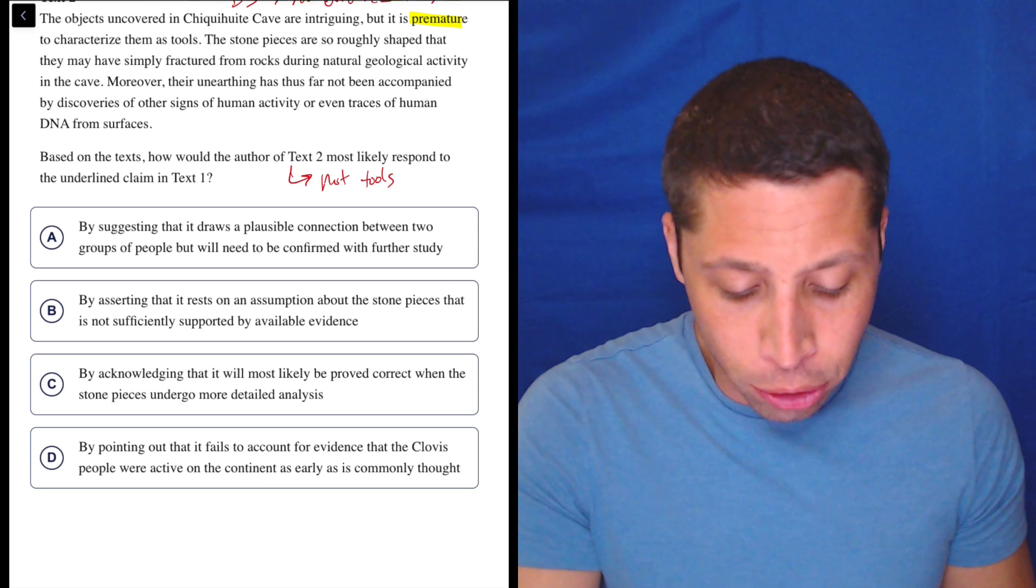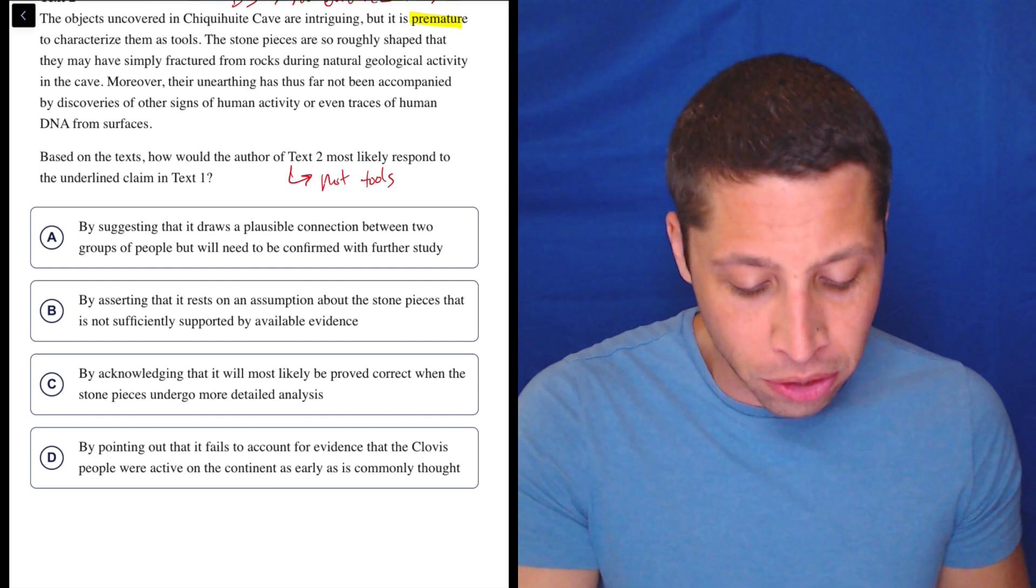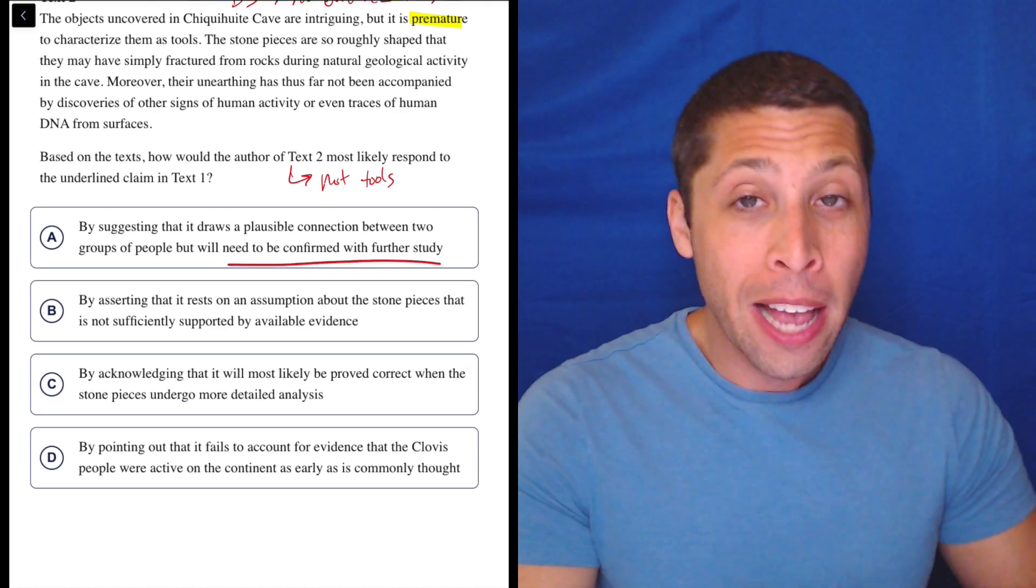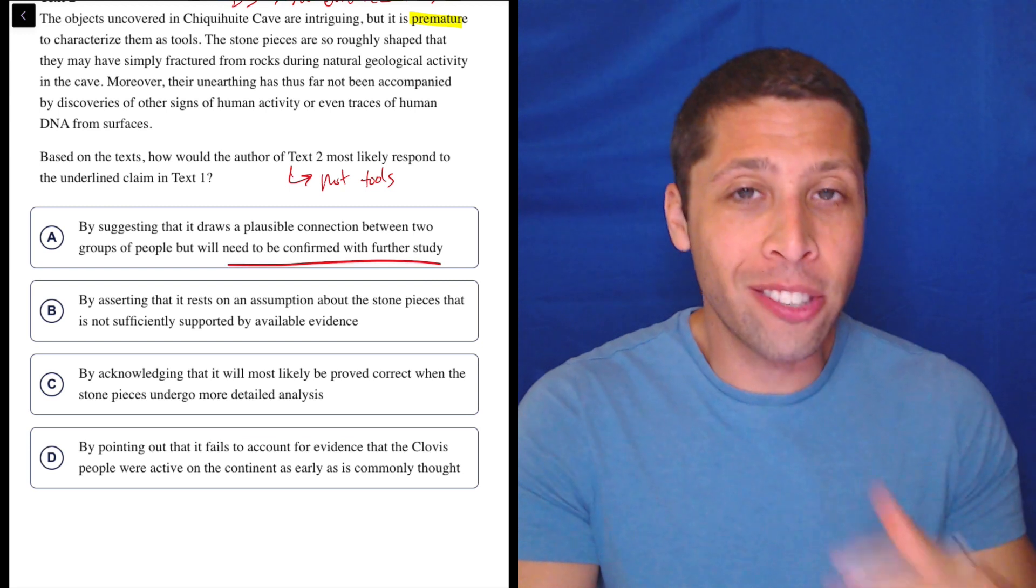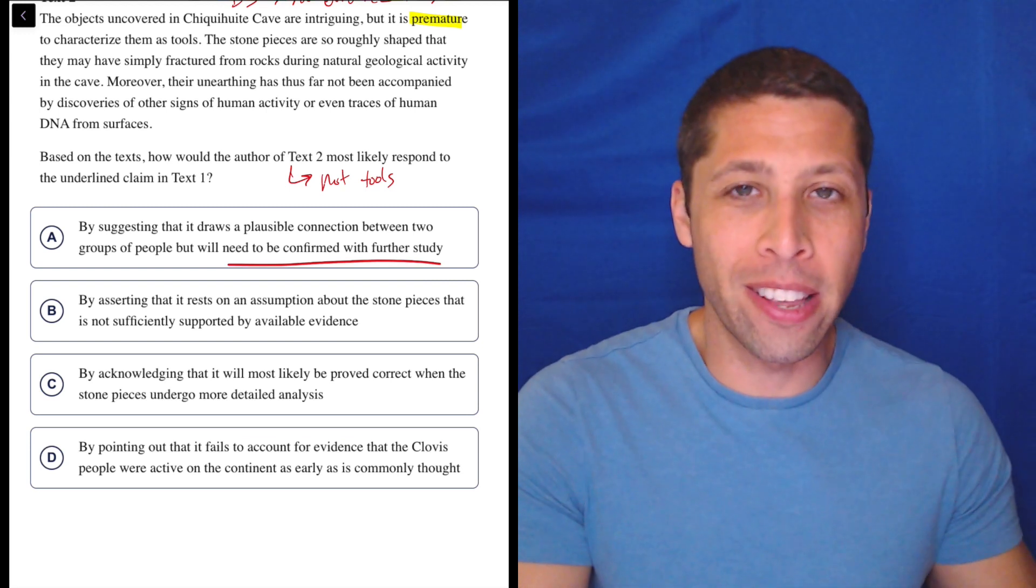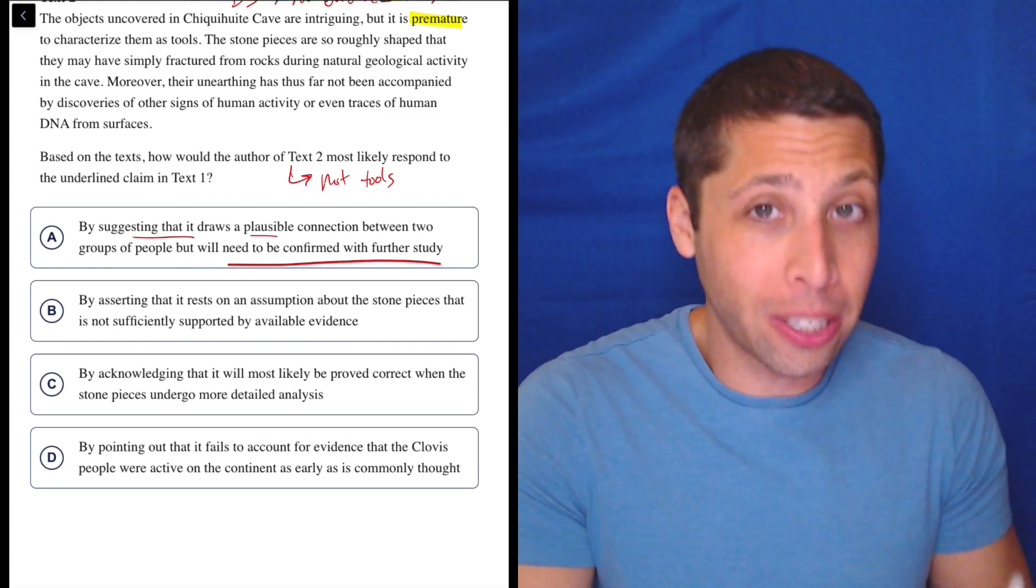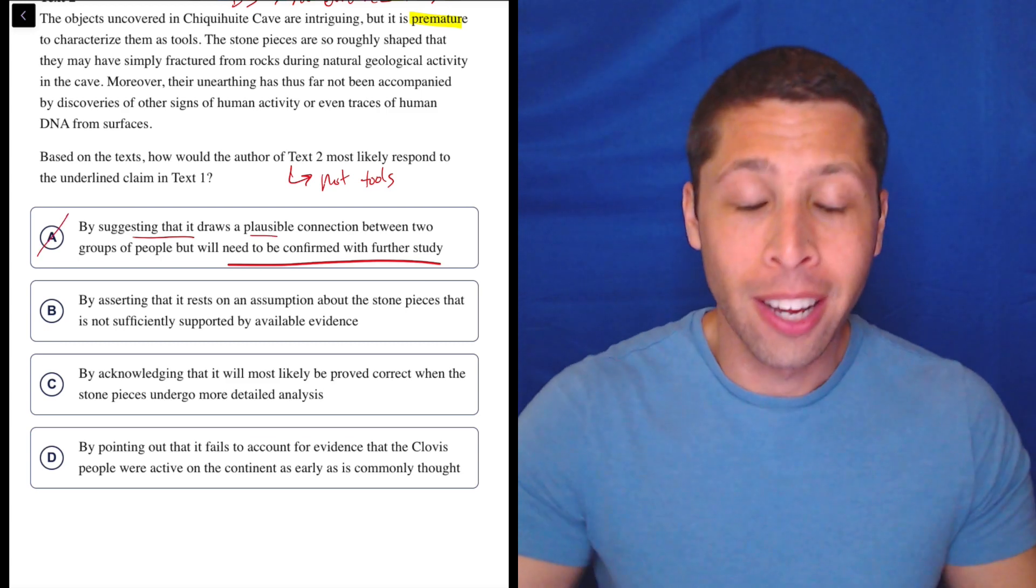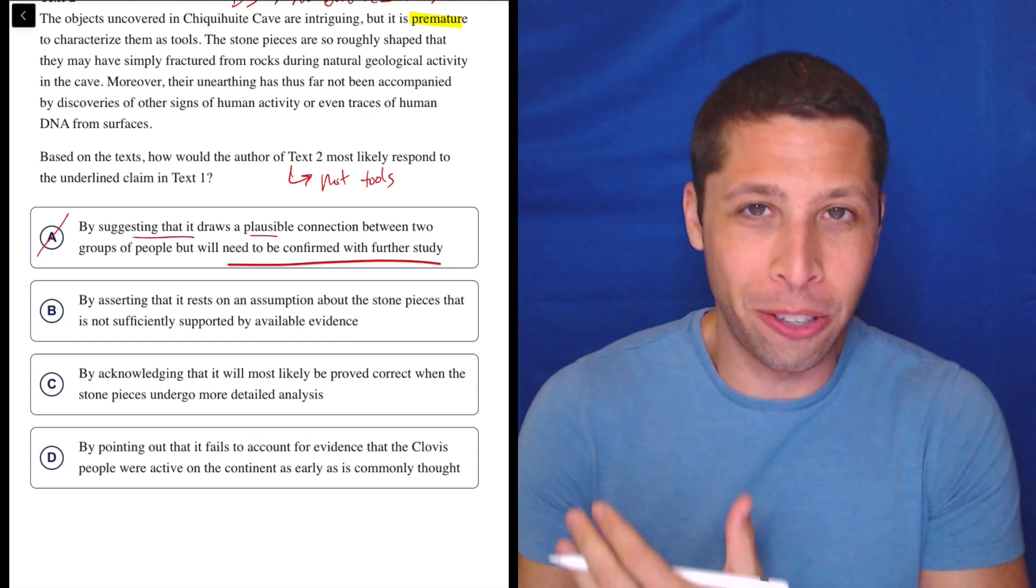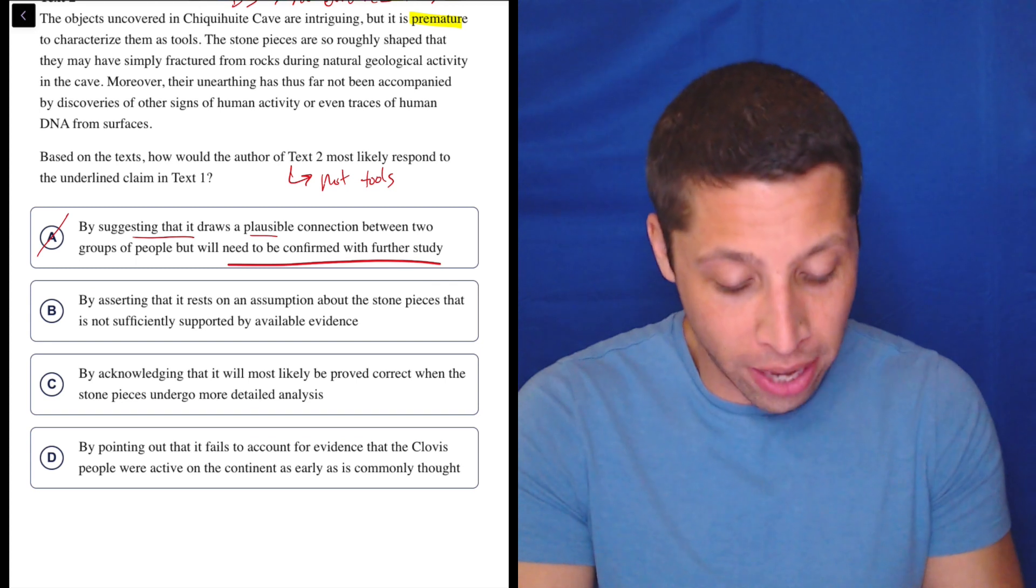A, by suggesting that it draws a plausible connection between two groups of people that will need to be confirmed with further study. No, no, no. Some people are gonna look at the end here and be like, oh yeah, text two is saying we need more evidence. But no, he's saying there is no evidence right now that any suggestion that this is a plausible connection is wrong. Because he's saying they're not tools, they're just rocks. So there are no people that use these tools, they're just rocks.